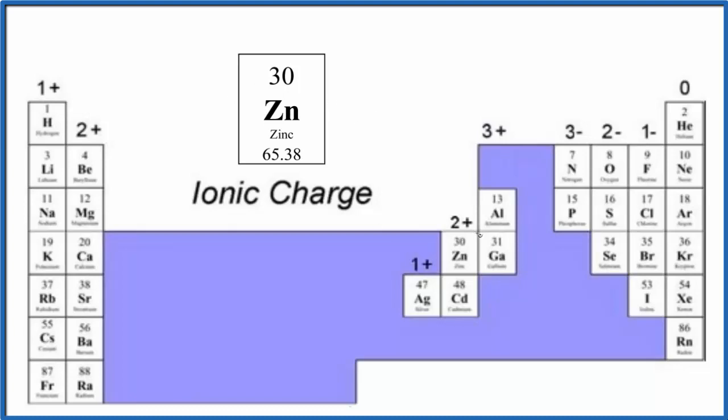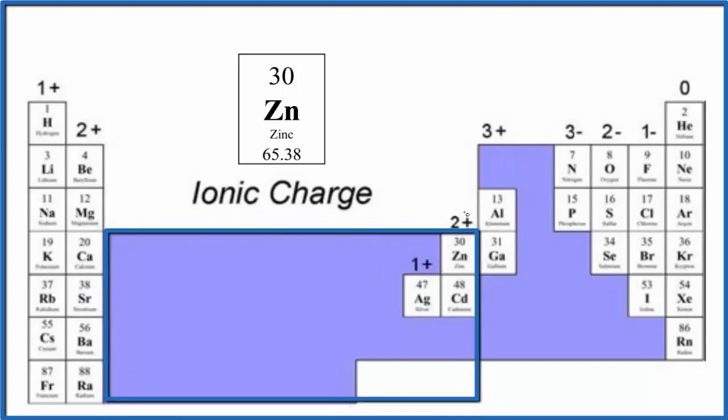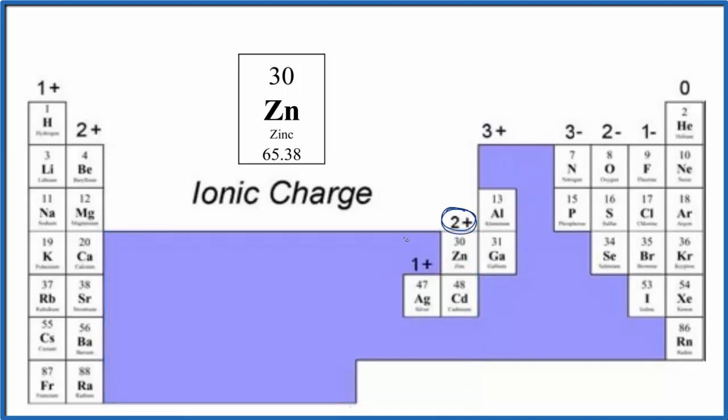On the periodic table, if we find zinc right here, zinc is kind of special. It's in with the transition metals, but unlike most of the transition metals, zinc is always 2+. It always forms ions with a 2+ ionic charge.